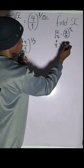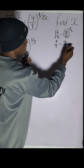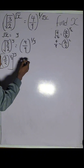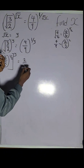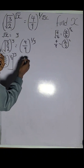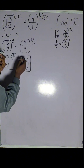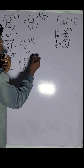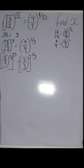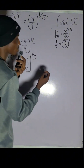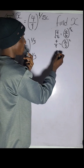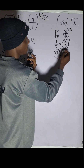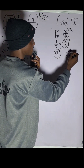So we have 2 over 3, raised to the power of 2, then in brackets raised to the power of 1 over y. Now recall the law of indices: if you have a raised to the power of b, raised to the power of c, this equals a raised to the power of b times c.